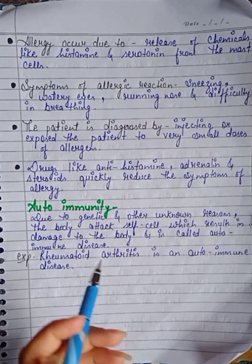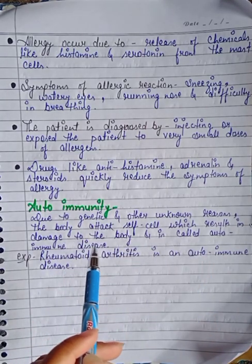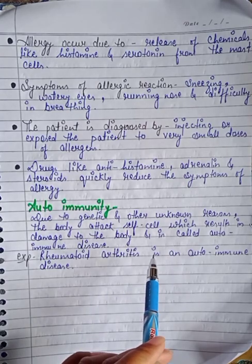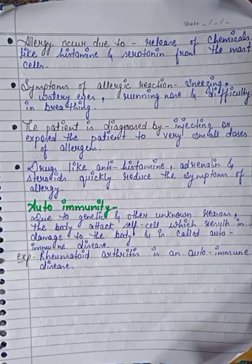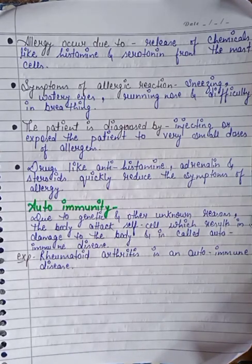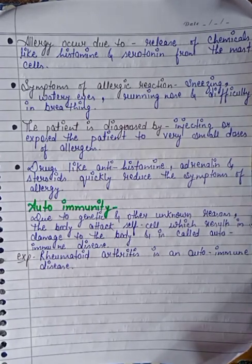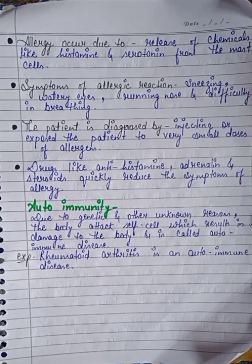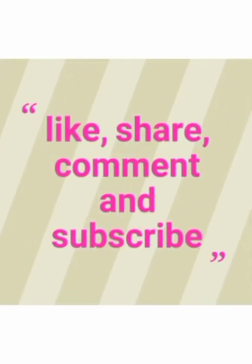Autoimmunity: due to genetic and other unknown reasons, the body attacks its own self-cells, which results in damage to the body — this is called autoimmune disease. For example, rheumatoid arthritis is an autoimmune disease where the body attacks its own cells, leading to the symptoms of the disease.